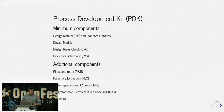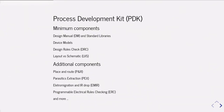The process design kit consists of a design manual, standard libraries, device models, DRC rules, and layout versus schematic checks. In addition, you can have place and route, parasitic extraction, EMIR, ERC, and many more such tools and checks during this process.